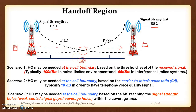This is the basic point of observation for this lecture. The first scenario is that handoff may be needed at the cell boundary based on the threshold level of the received signal. If a particular threshold level is required to maintain proper voice communication, then up to that boundary the threshold should be checked, and if the signal goes below the threshold then there should be a handoff. Naturally, the handoff may be needed at the boundary of the cell.